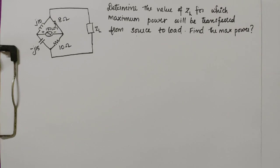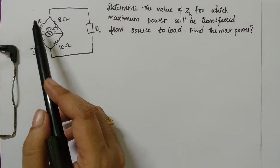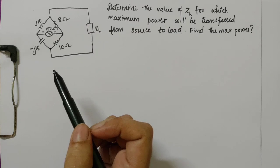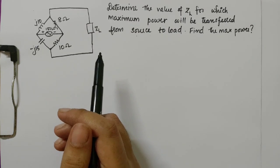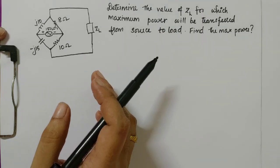Hello guys. Next question: determine the value of ZL for which maximum power will be transferred from source to load, and find the maximum power. Maximum power will be transferred from source to load if the load resistance and the source resistance are matched. We have an inductor, capacitor, and resistor — so it is impedance. If source impedance matches with load impedance, then maximum power will be transferred.